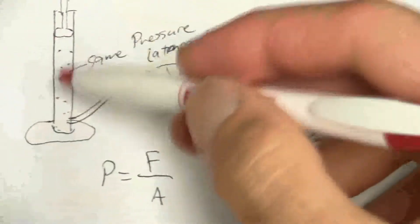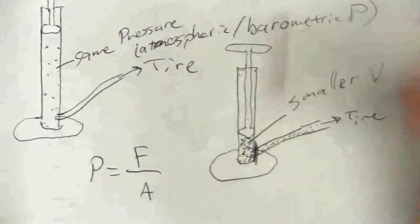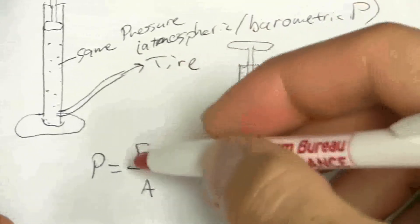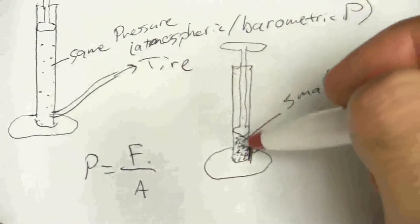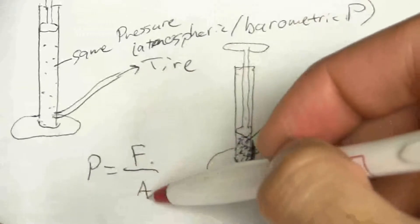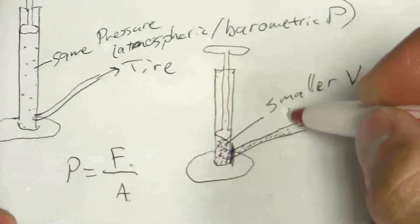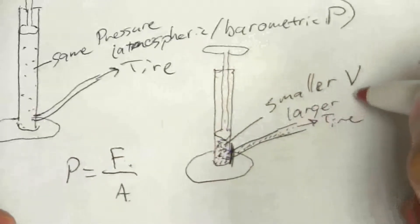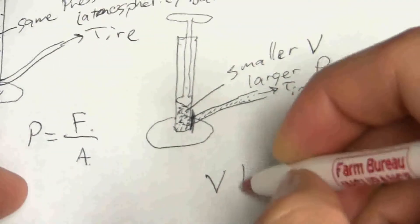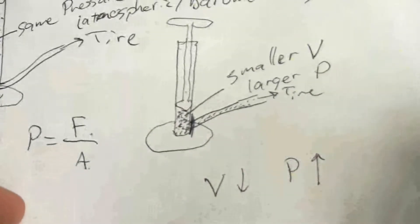So I have the same force of those molecules bouncing around, because the same number of molecules, so I have the same number of bouncing around on the walls. It's exerting the same force, but now it's on a smaller area. So dividing by a smaller area, that means I'm going to have a higher or larger pressure. So as the volume decreases, my pressure increases.